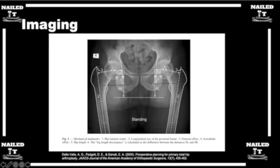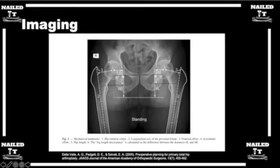Just to recap: the Dorr classification looks at femoral shaft morphology. Dorr A patients have a narrow canal — you may think about a longer stem. Dorr C patients have a wide canal — you may consider a cemented component. You also look at dysplasia to determine how much offset you need to recreate normal anatomy. Those are the big things to think about in pre-operative workup.